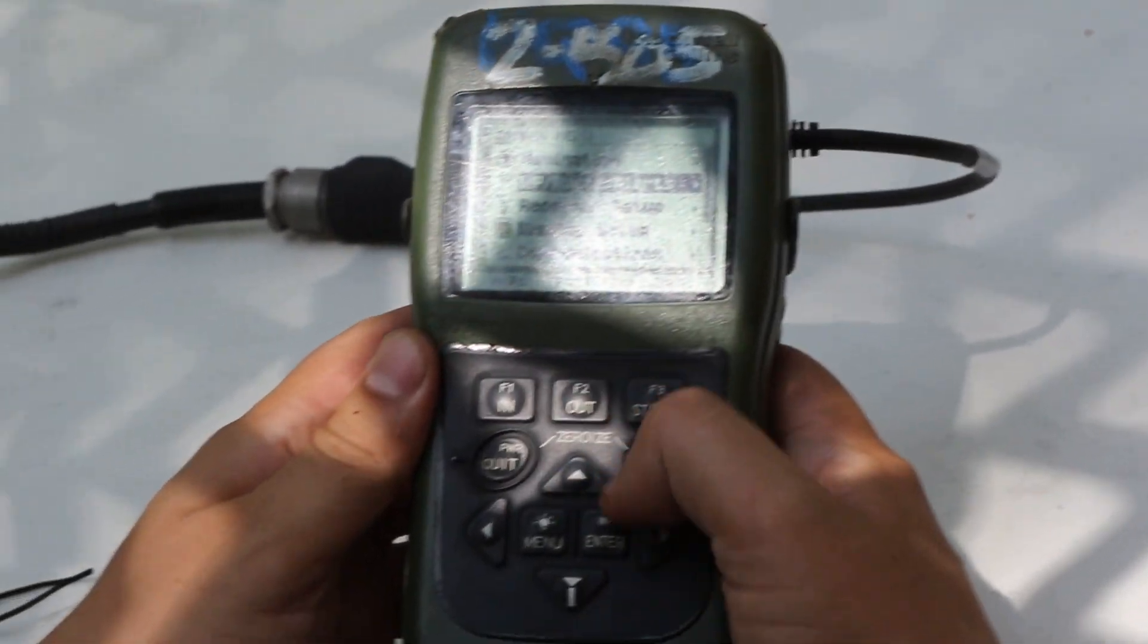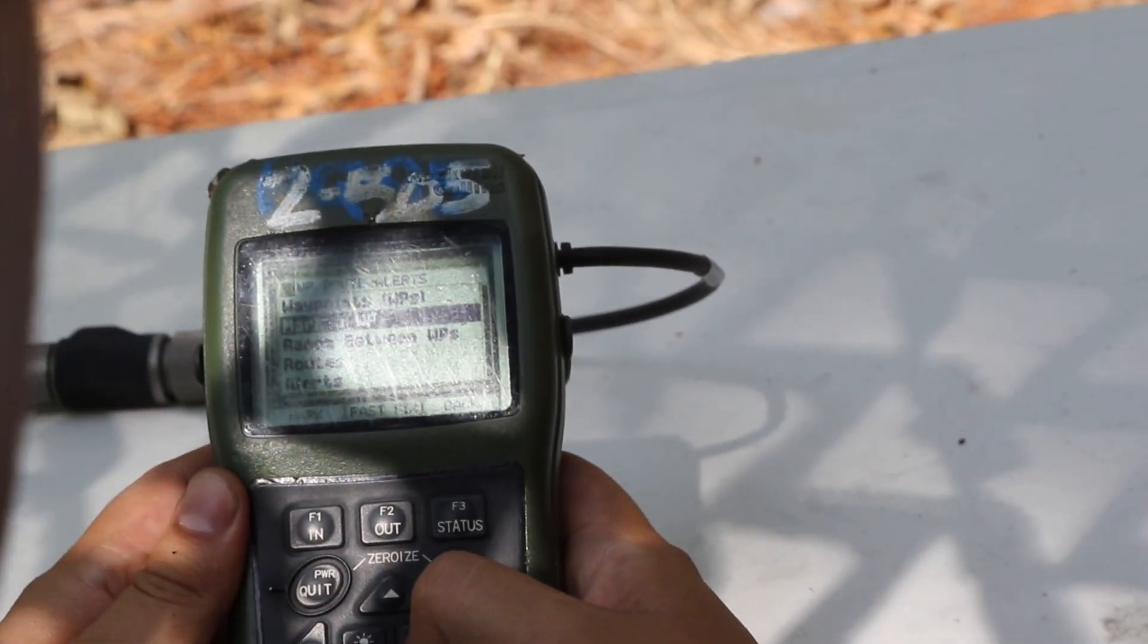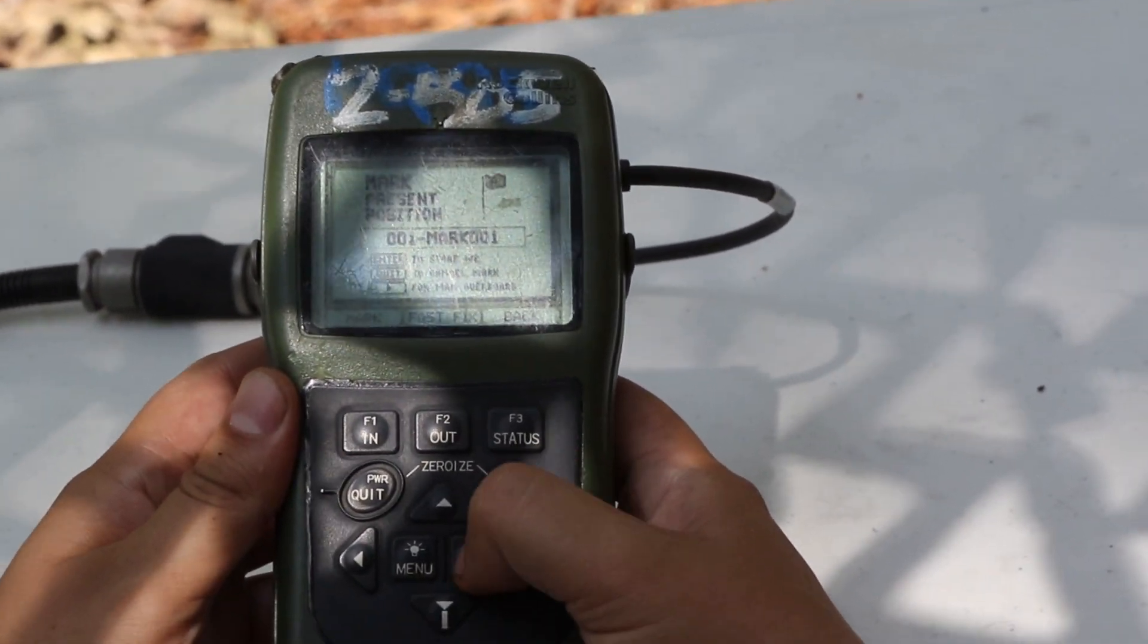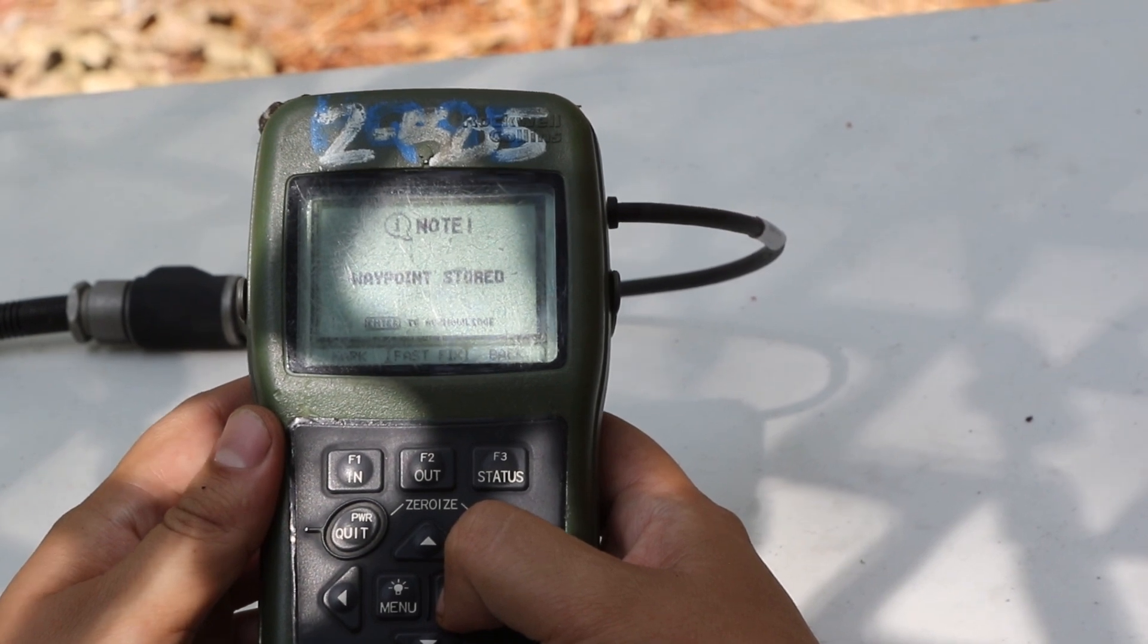Go to waypoint. Waypoints, routes and alerts. Mark a waypoint. This is my present waypoint. Mark present position. Enter. Store the waypoint.